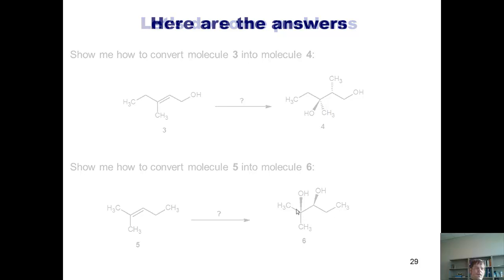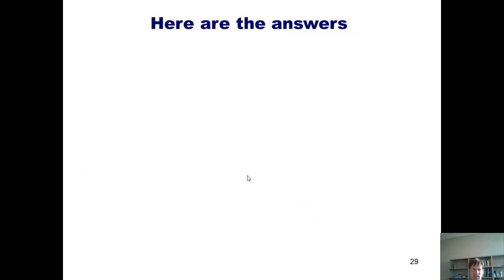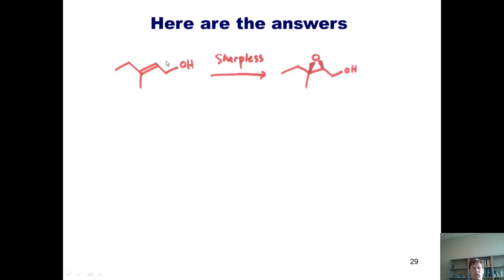So here are the answers. As we look at this starting material, we want to convert it to this product. It's obvious that the product has a stereocenter that has an oxygen in it. We can see that our starting material is an allyl alcohol.